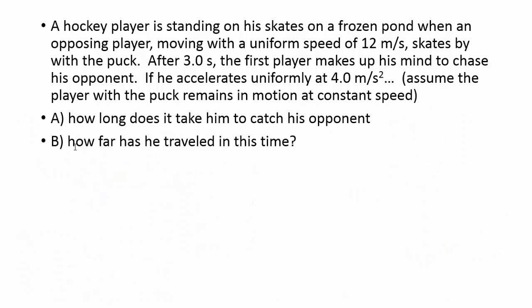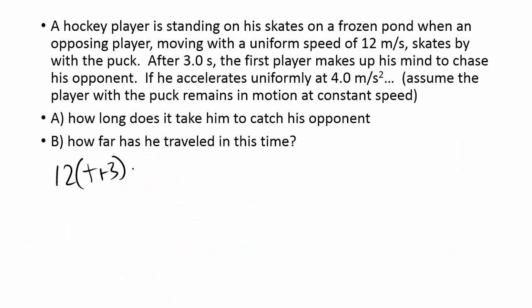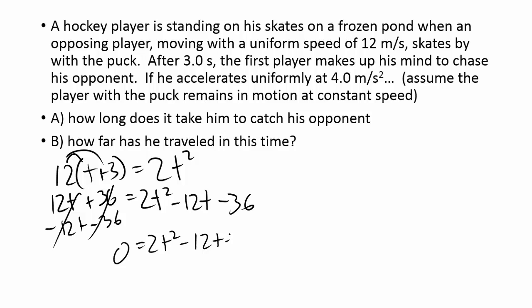So I'm going to flip to the next page to do that. We've got 12 times (t plus 3), that was the skater, is equal to 2t squared, the chaser. Now we just have to solve this like a quadratic equation. So I'm going to want to distribute the 12 here first. That'll give me 12t plus 36 is equal to 2t squared.